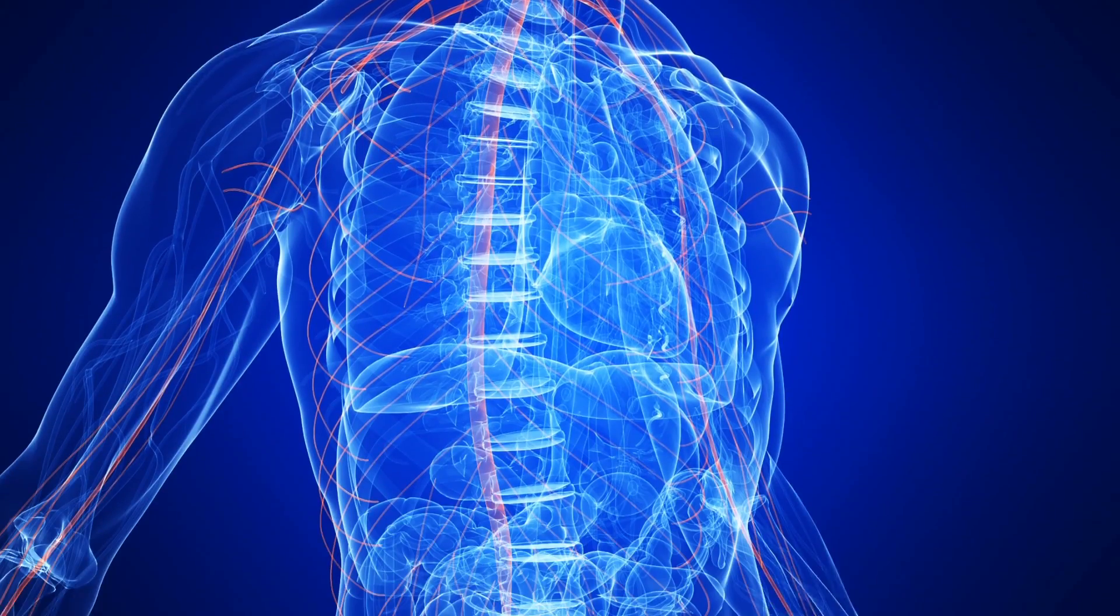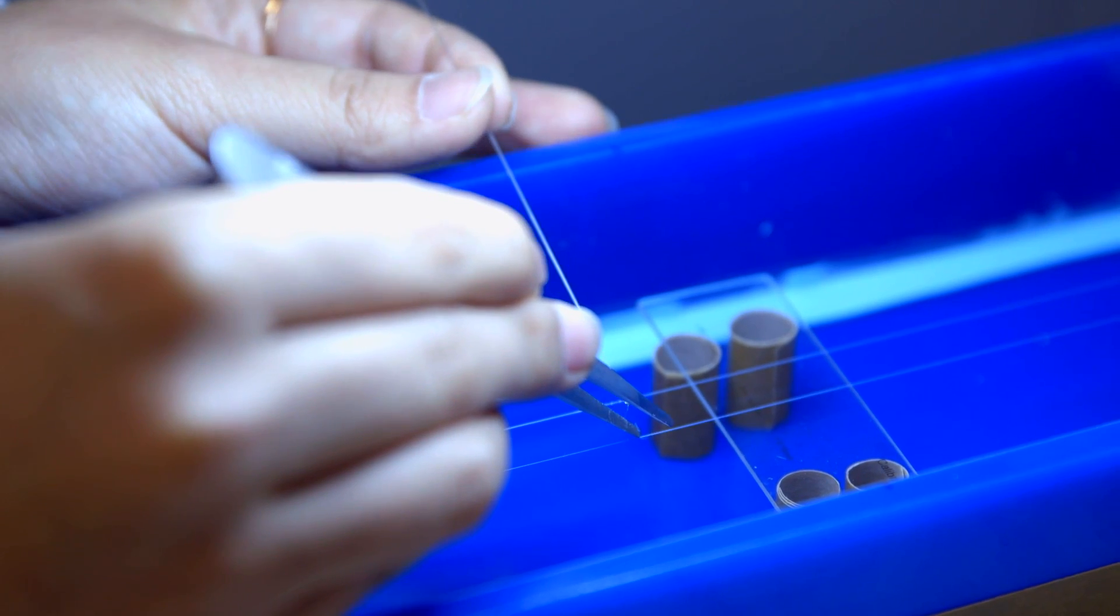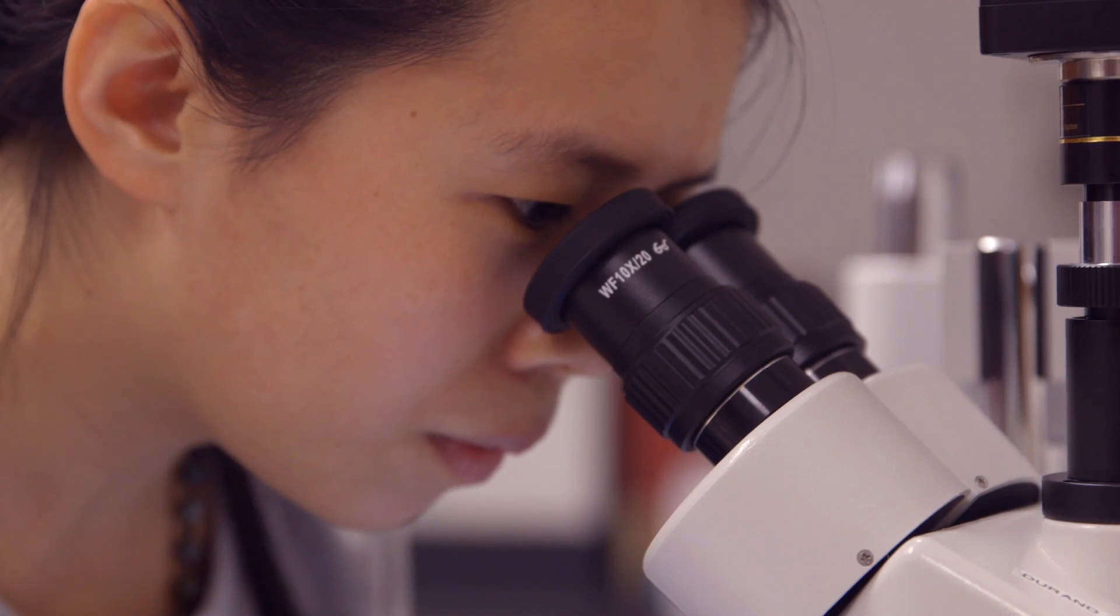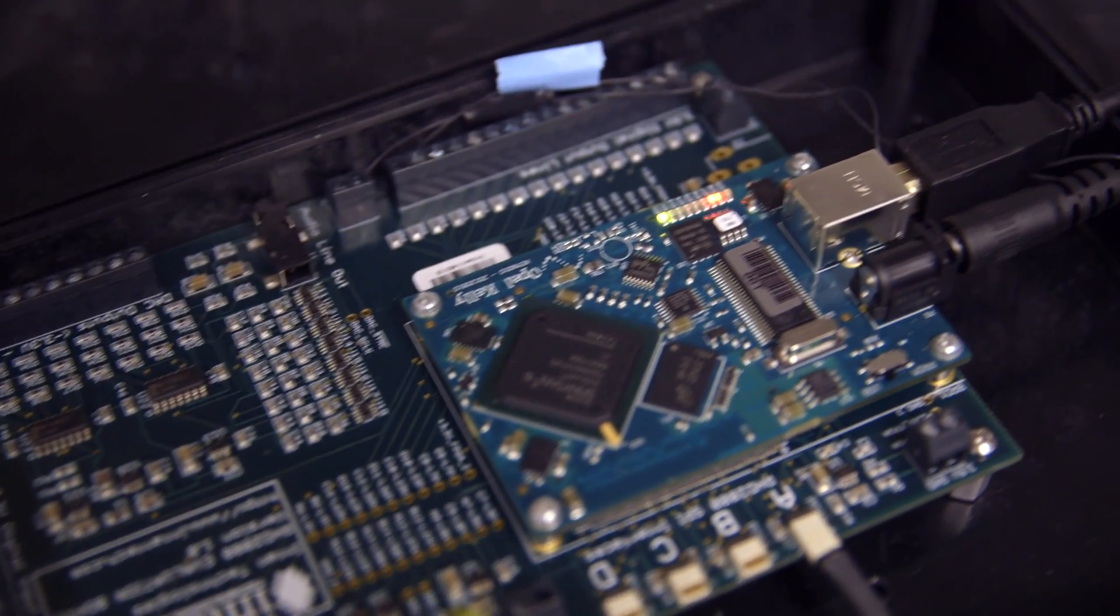This nervous system controls every organ in the body, and by placing very small wires that feel like individual axons, we are able to record from this very small nerve for very long periods of time.